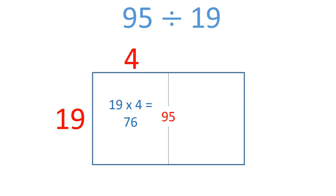If the entire rectangle has an area of 95, that means the remaining section has an area of 19, because 95 minus 76 equals 19. 19 times 1 equals 19, so the length of the second section is 1.